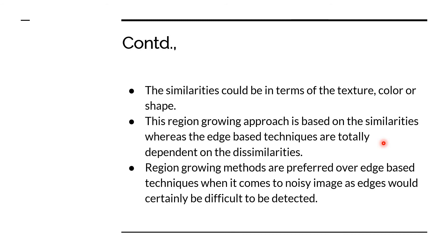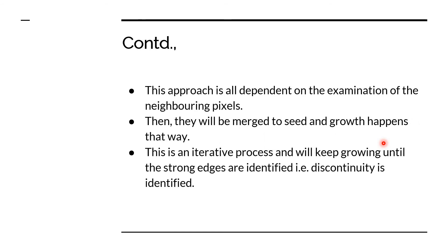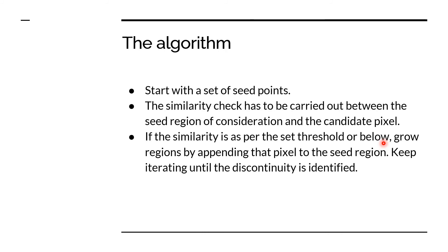Region growing methods are much preferred over edge-based techniques when it comes to noisy images, because in noisy images it is not easy to identify edges — the noise troubles you in identifying them. So in those cases, it's pretty easy to go ahead with region growing methods. We examine the neighboring pixels and check if they share the same features and characteristics. If the same features are found in a neighboring pixel, I add it to my region, and this is an iterative process until a discontinuity is identified.